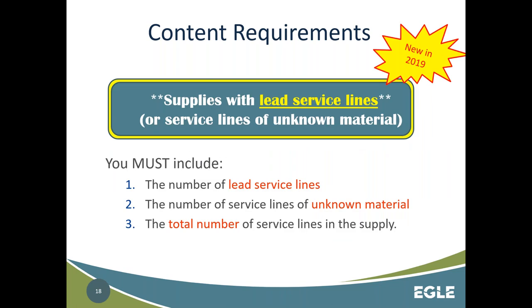Another new addition for the lead and copper rule deals with lead service lines. If you have any lead service lines or service lines of unknown material in your system, you must include the number of those service lines — either the number of lead service lines or the number of unknown material lines, or both if applicable — and also list the total number of service lines in the supply. This gives customers context; saying you have 100 lead and 100 unknown out of 1,000 is very different from 100 of each out of 200. This is a requirement, so please don't miss it, as we may require you to redo your report.